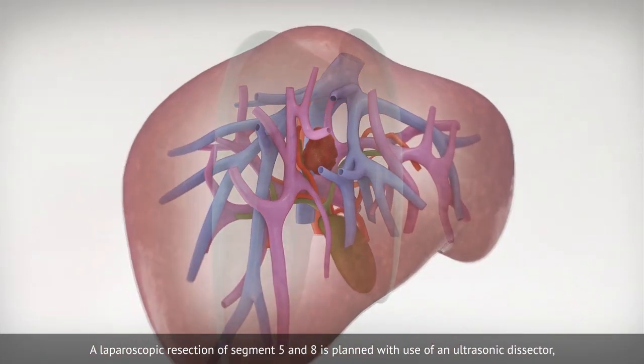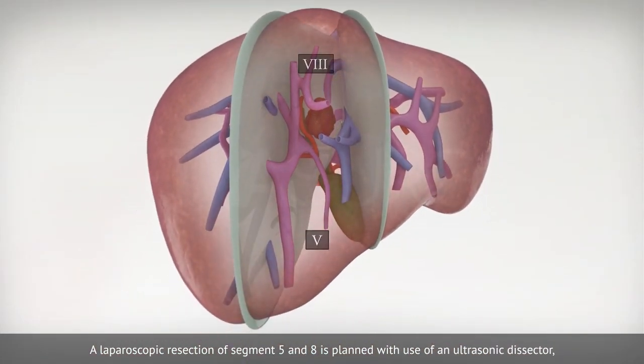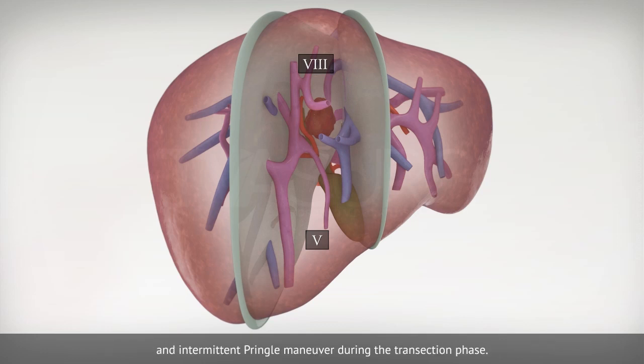A laparoscopic resection of segment 5 and 8 is planned with use of an ultrasonic dissector, and an intermittent Pringle maneuver during the transection phase.